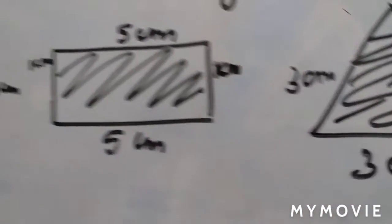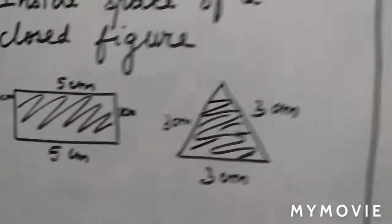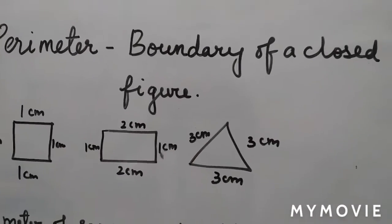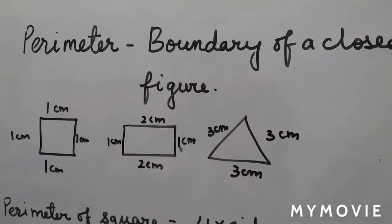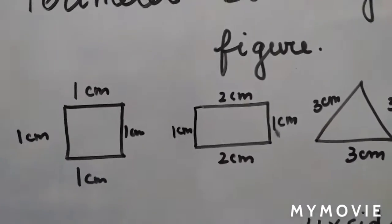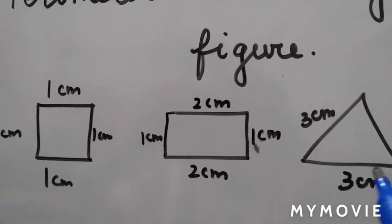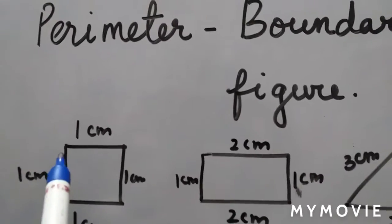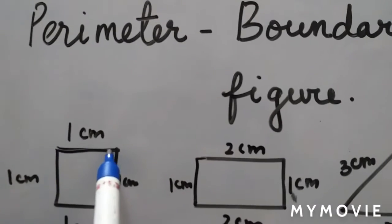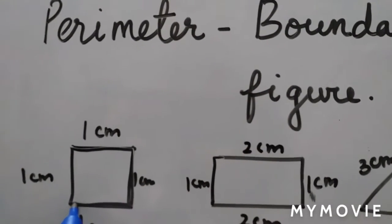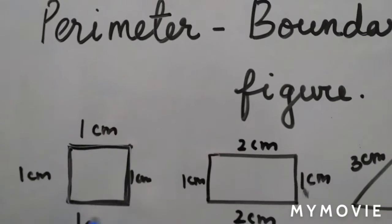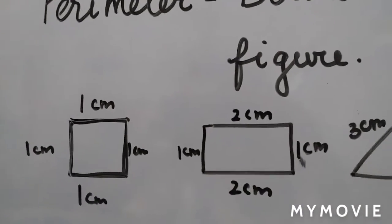Now what is the perimeter? You have done this in class 4 also. We call the boundary of a closed figure the perimeter. You have the same figures: square, rectangle, triangle. The perimeter is the boundary. Here, this boundary is what we will call the perimeter in this case.